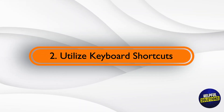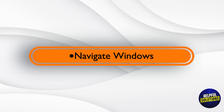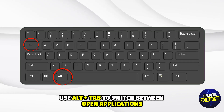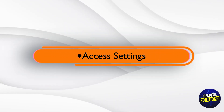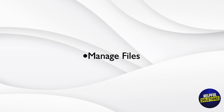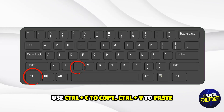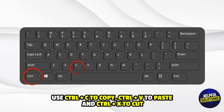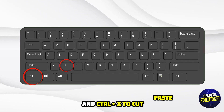Utilize keyboard shortcuts to navigate Windows. Use Alt plus Tab to switch between open applications. Press Windows plus I to open Settings. To manage files, use Ctrl plus C to copy, Ctrl plus V to paste, and Ctrl plus X to cut.